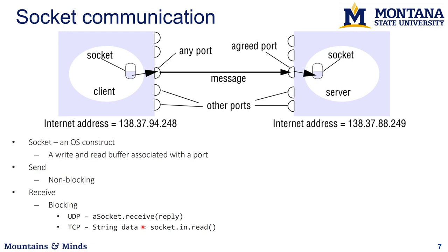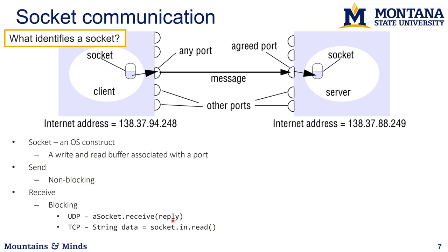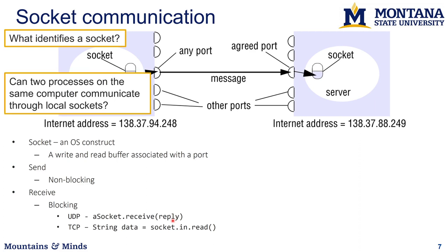Both UDP and TCP connect using sockets. We have two clients, each with a socket, and the socket connects through ports managed by the OS on each machine. You can send data from any port, but there's usually an agreed port to connect to on the server — such as port 80 for HTTP. Sending is generally non-blocking, but receive will block, so if you're trying to receive data your program will wait on the OS to give data back.